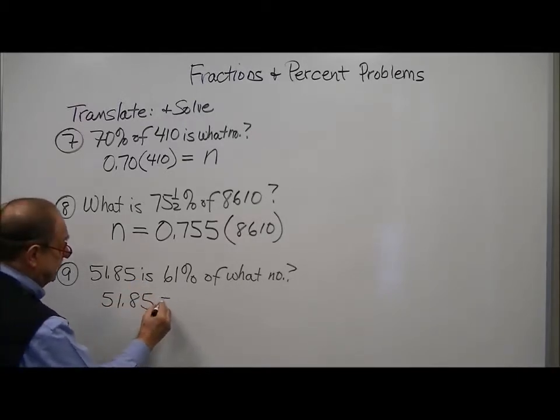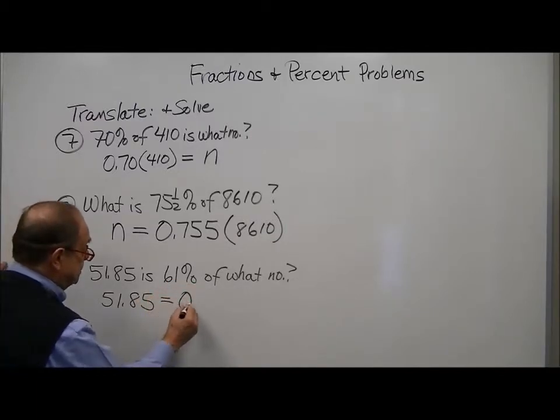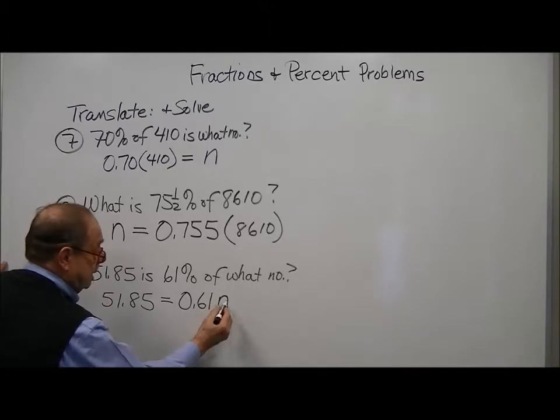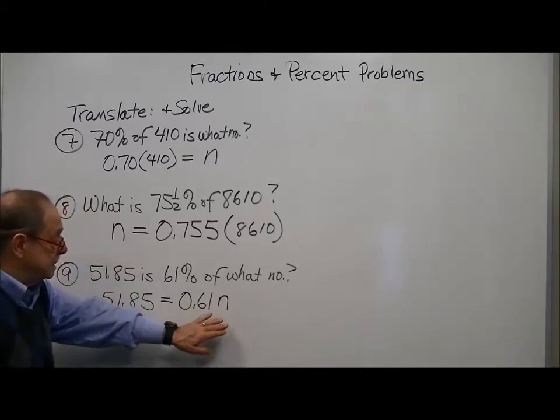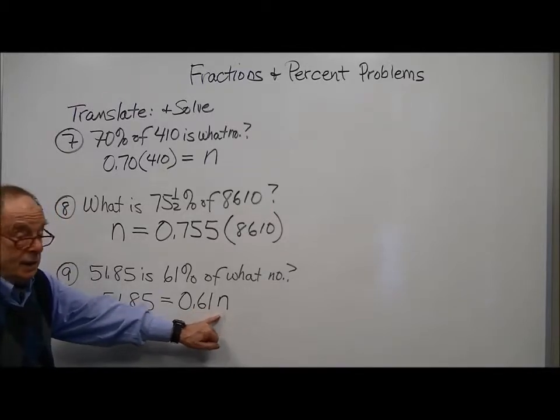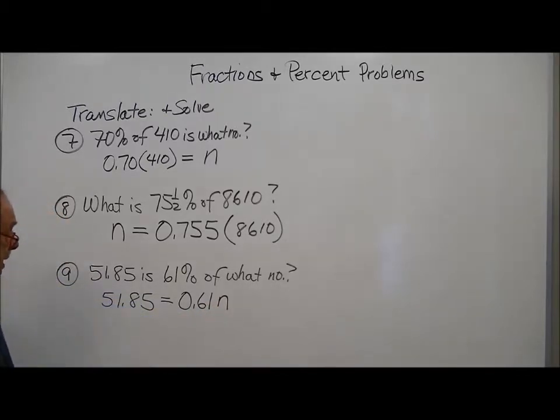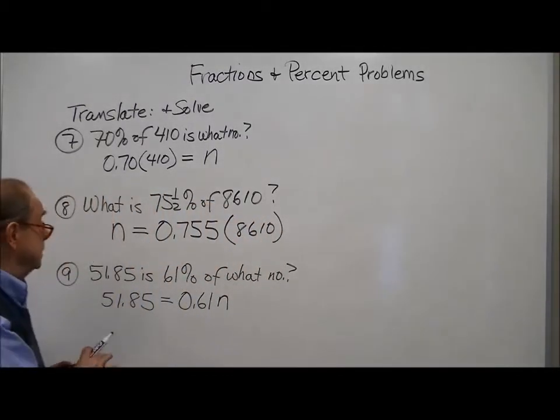'Is' is an equal sign. 61% converted to a decimal. 'Of' is multiplication. And since we're multiplying, we can put parentheses but it's not needed because no symbol between a letter and a number implies multiplication. So what we've done is we've translated, and now we're going to solve.